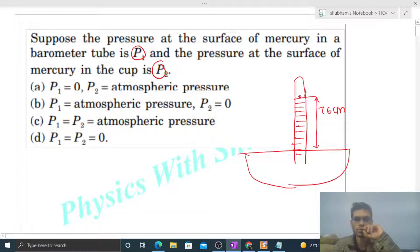And here is the surface inside this barometer tube at the surface of mercury. Here is a point, let's say point 1.